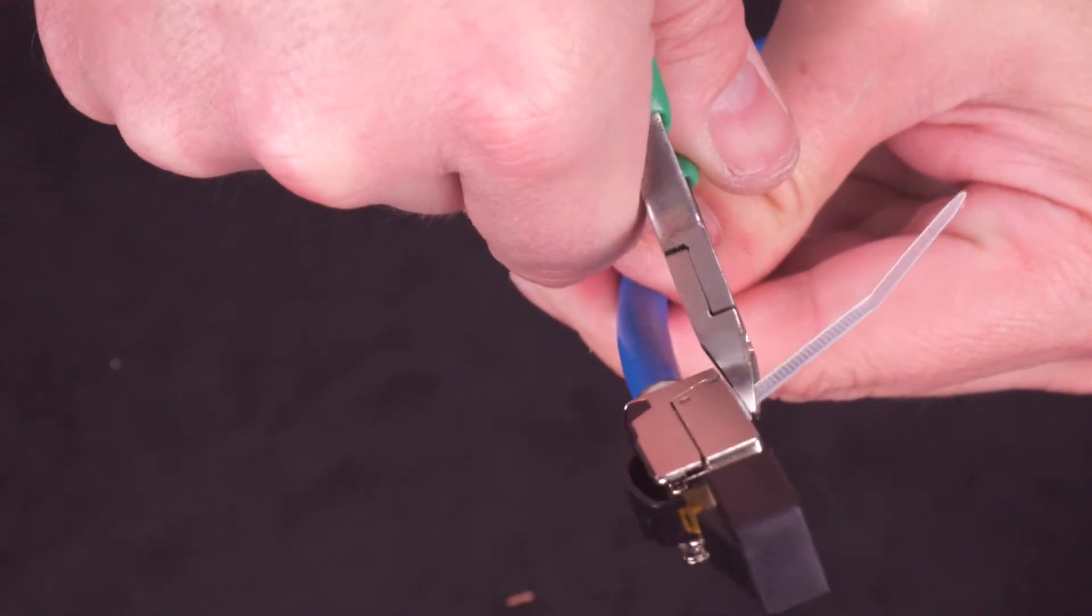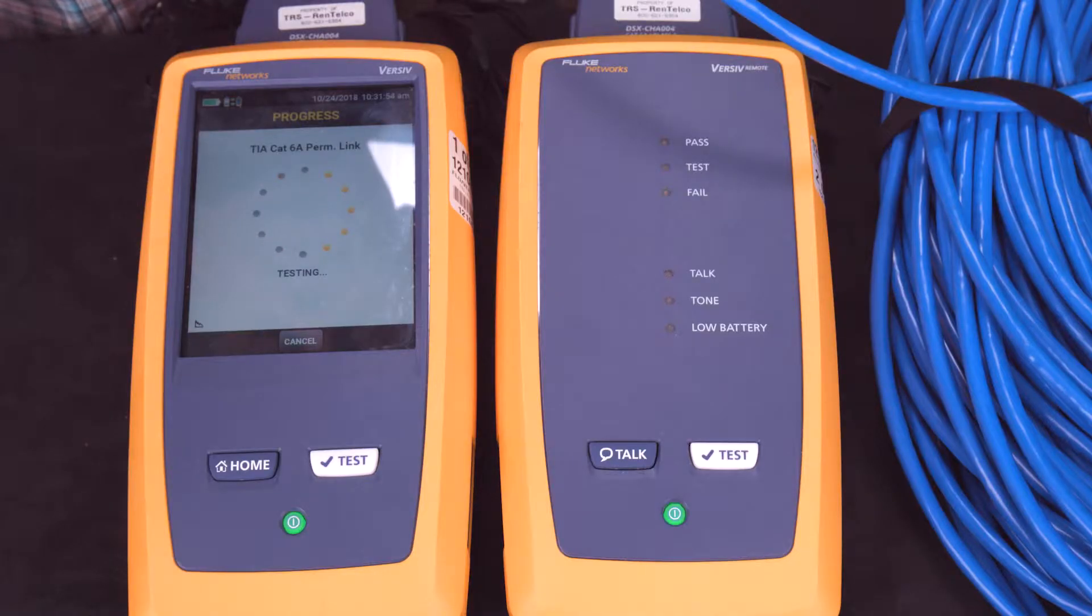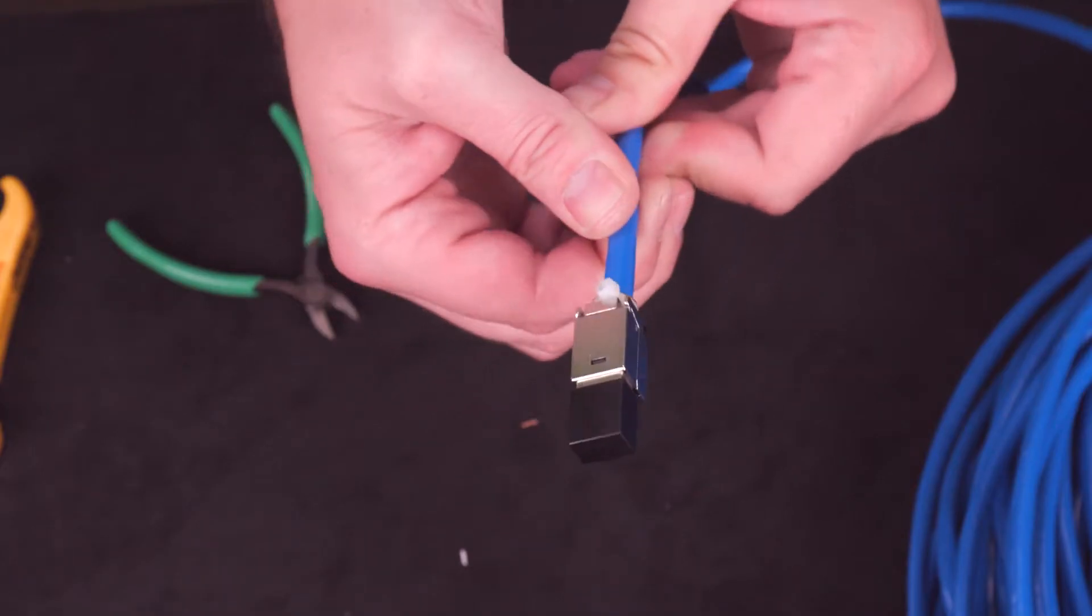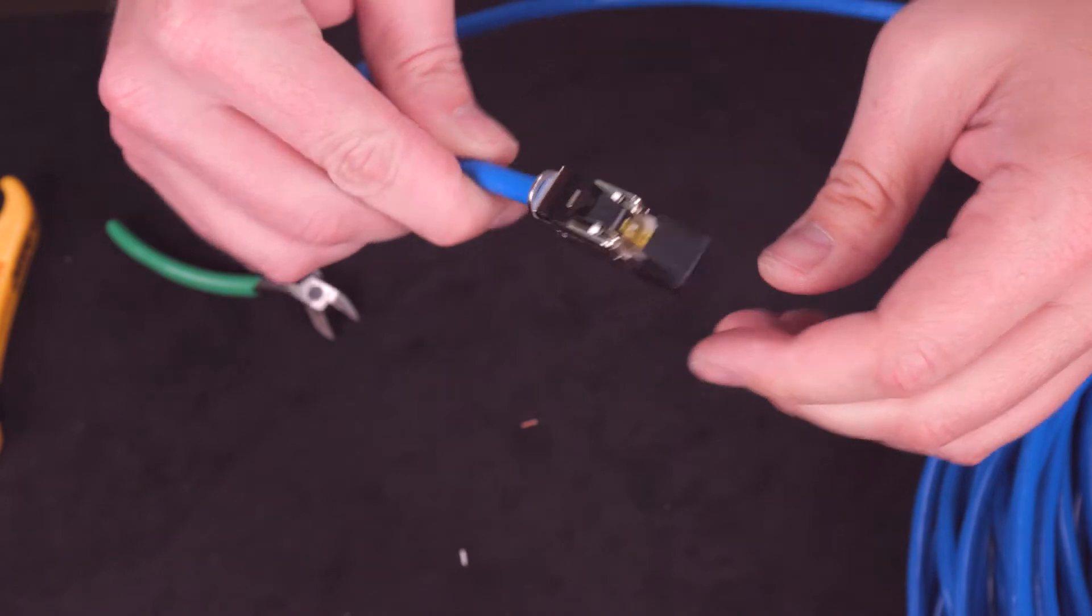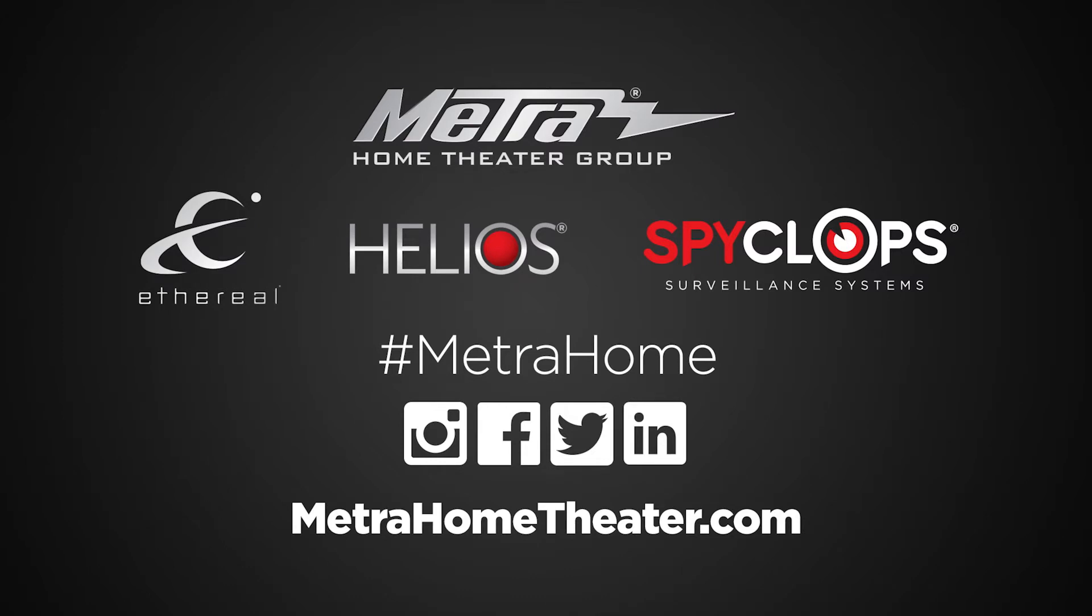Now, secure the head shell with the included wire tie. Trim the wire tie. Verify your cables using a 10G compliance tester. And you are done.